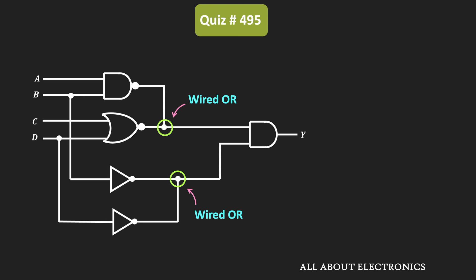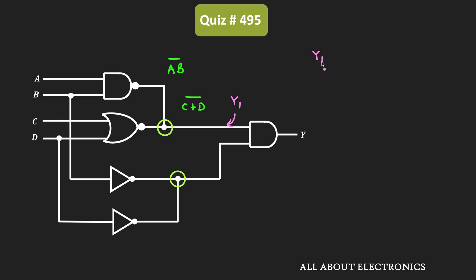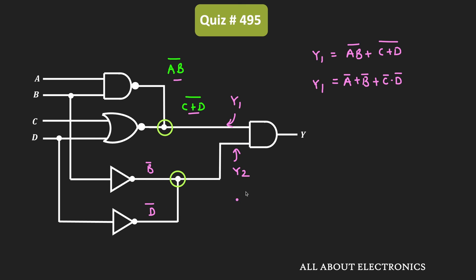Now it is easy to find the input conditions for which the output Y becomes 1. First, let us find the expression of output Y in terms of inputs ABCD. The output of the first NAND gate is AB̄. The output of the NOR gate is (C+D)̄. Let Y1 be one of the inputs to the final NAND gate. Y1 is the OR connection of those two outputs, so Y1 = AB̄ + (C+D)̄ = Ā + B̄ + C̄·D̄. Similarly, let Y2 be the second input to the final NAND gate. Y2 is the OR connection of B̄ and D̄, so Y2 = B̄ + D̄.